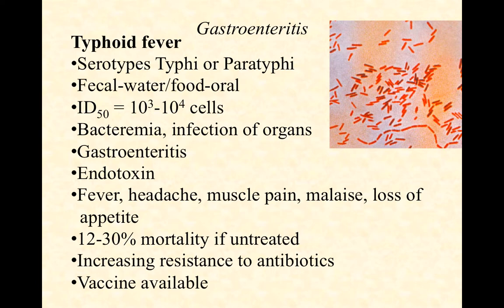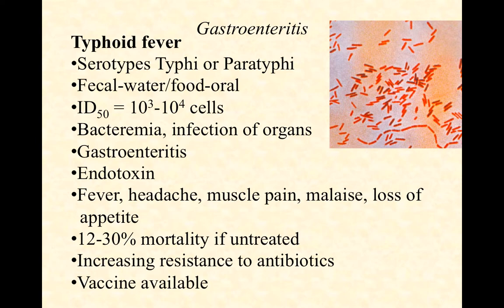Typhoid fever is transmitted via fecal-oral route with a vehicle intermediate of food or water, getting from the feces of one person into food or water and into the mouth of the next. The ID50 value is moderate — 1,000 to 10,000 cells to cause disease. They can cause bacteremia, infecting organs if they reach the bloodstream, and of course gastroenteritis. Endotoxin plays a big role in disease progression. Symptoms include fever, headache, muscle pain, malaise, and loss of appetite. Mortality rate is high — as high as 1 in 3 if untreated. If treated, it tends to still respond to antibiotics, though resistance is increasing. In regions where typhoid is endemic, a vaccine is available.